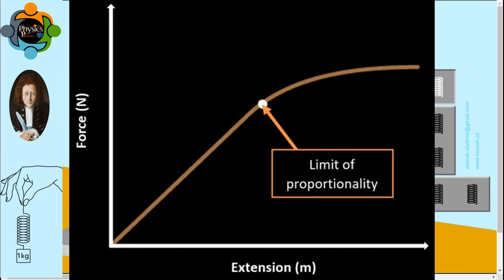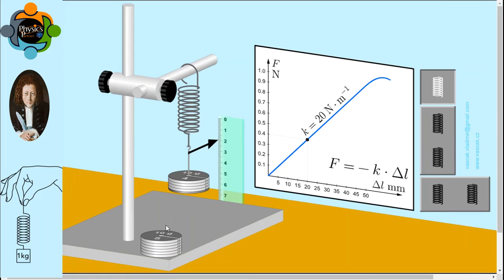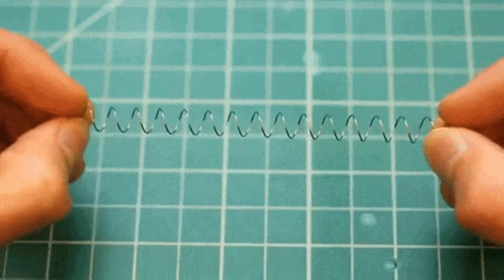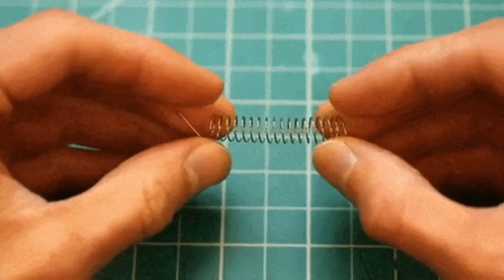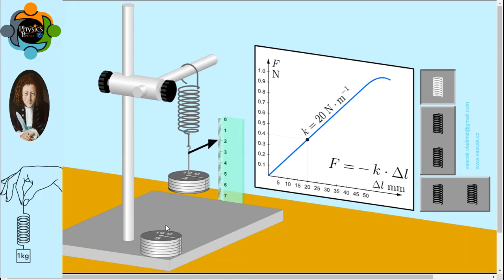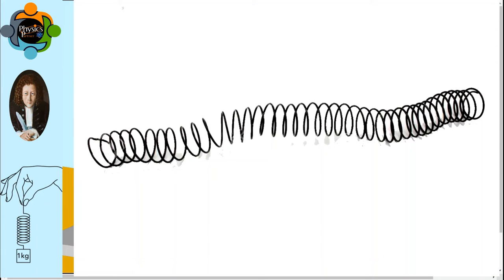But this law is applicable up to only a specific point. This specific point is called elastic limit. To understand elastic limit, just consider a simple example from your daily life. If you stretch this spring multiple times, the spring will come back to its original position. But if you stretch it with a very huge force, the spring is deformed. It means you applied the force which crosses the elastic limit.